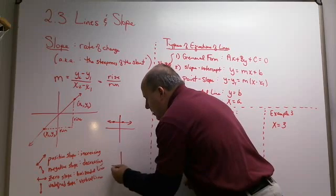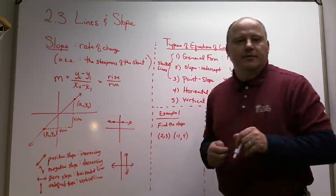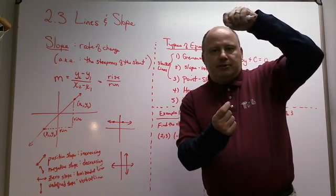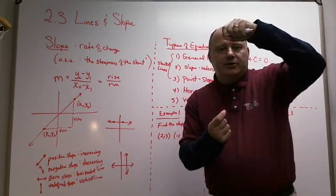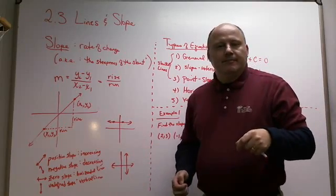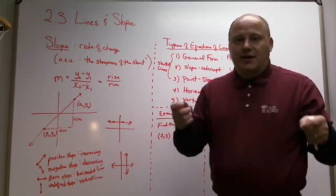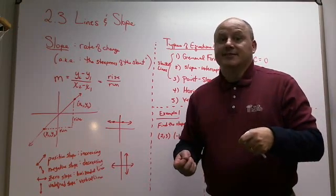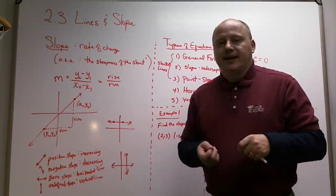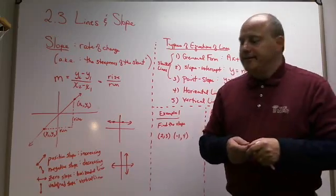The undefined slope occurs when you have a vertical line. With a vertical line, the run is zero — there's no horizontal span between the two x-coordinates. Since rise over run puts the run in the denominator, you end up dividing by zero. You cannot divide by zero, so the slope is undefined — and that's a whole other topic in itself.